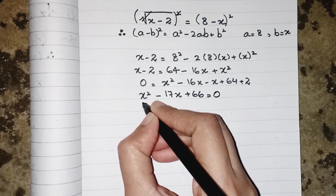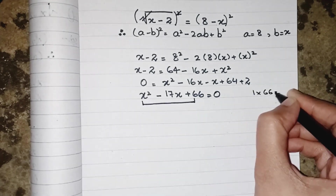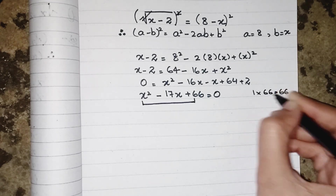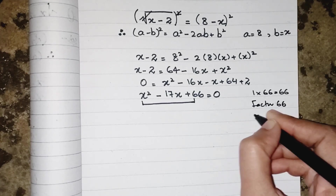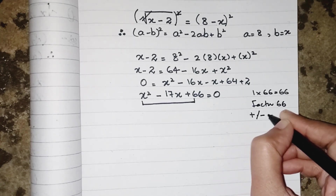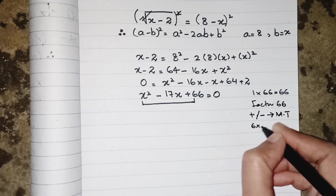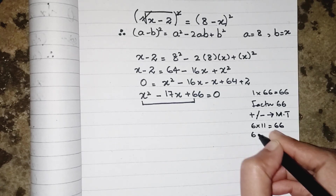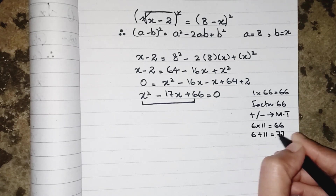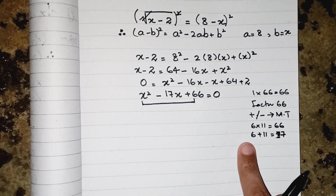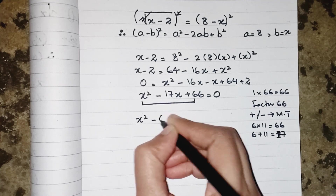This is a quadratic equation. We multiply the coefficient of the first and last terms: 1 times 66 equals 66. Now we find factors of 66 that add or subtract to give the middle term. We know 6 times 11 equals 66 and 6 plus 11 equals 17, so we use 6 and 11 in place of 17.